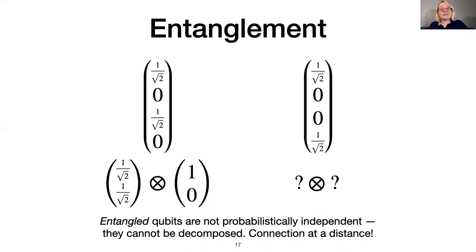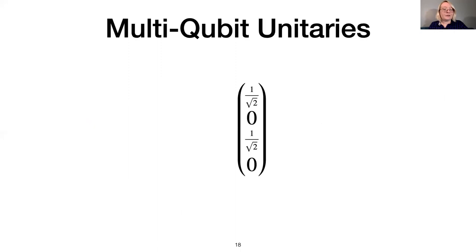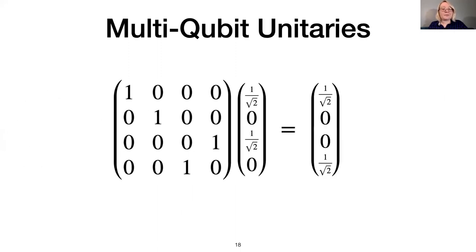What this means for formal verification is that we cannot model state as we would in the classical setting, with a simple map from variables to independent values, because the values of different variables may be related. Instead, we need to reason about a global state. Some unitary operations apply to multiple qubits. One example of a two-qubit gate is the CNOT, or controlled-not gate. This gate is the quantum equivalent of an XOR gate, and is used to create entanglement between qubits. On this slide, we show that applying a CNOT to the plus-zero state produces the entangled state from the previous slide.